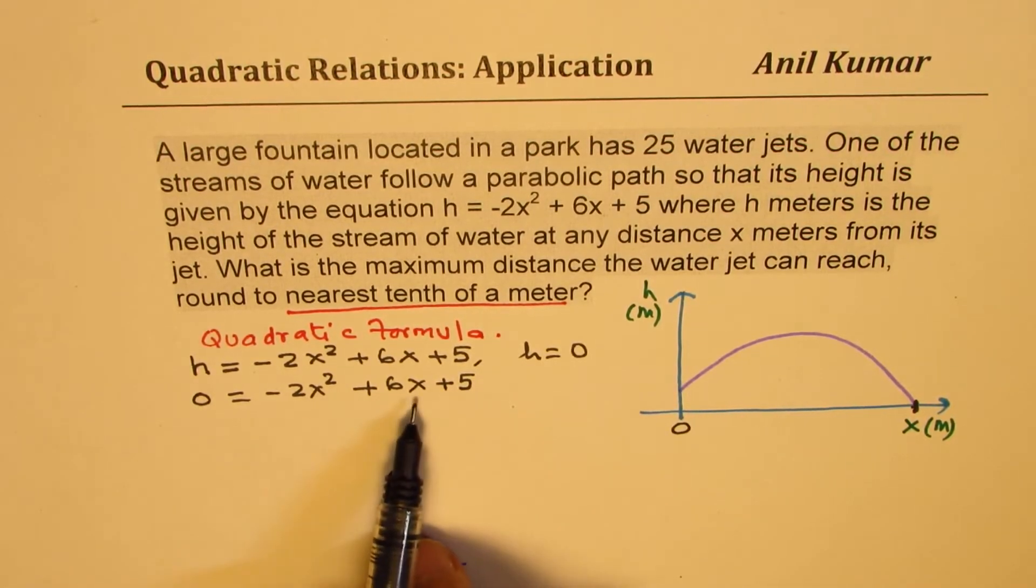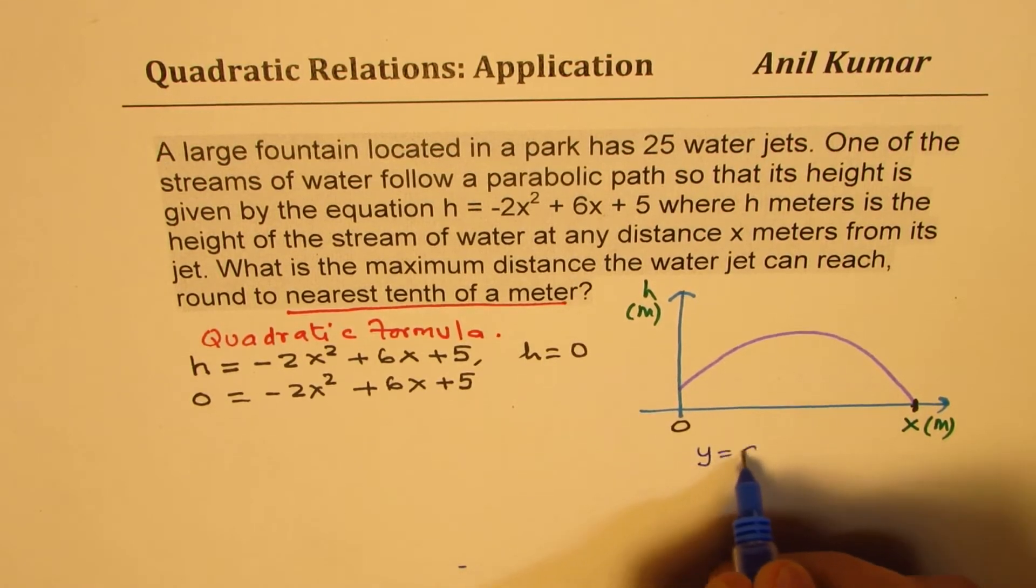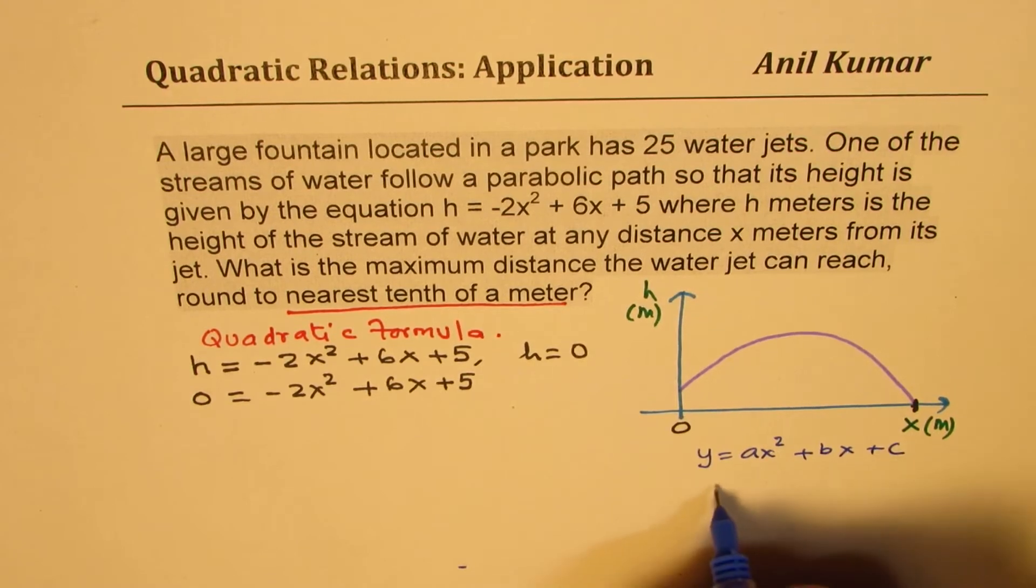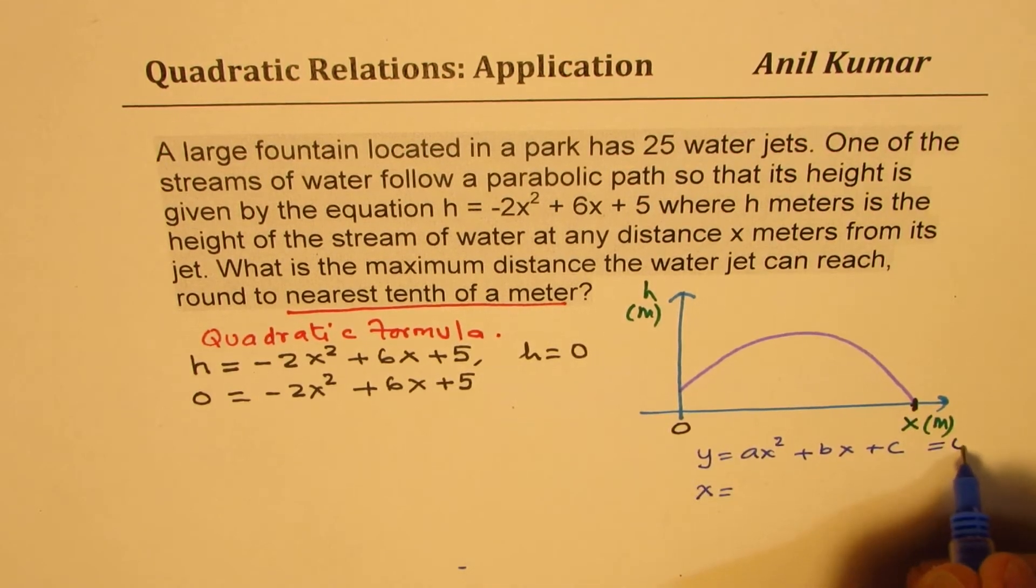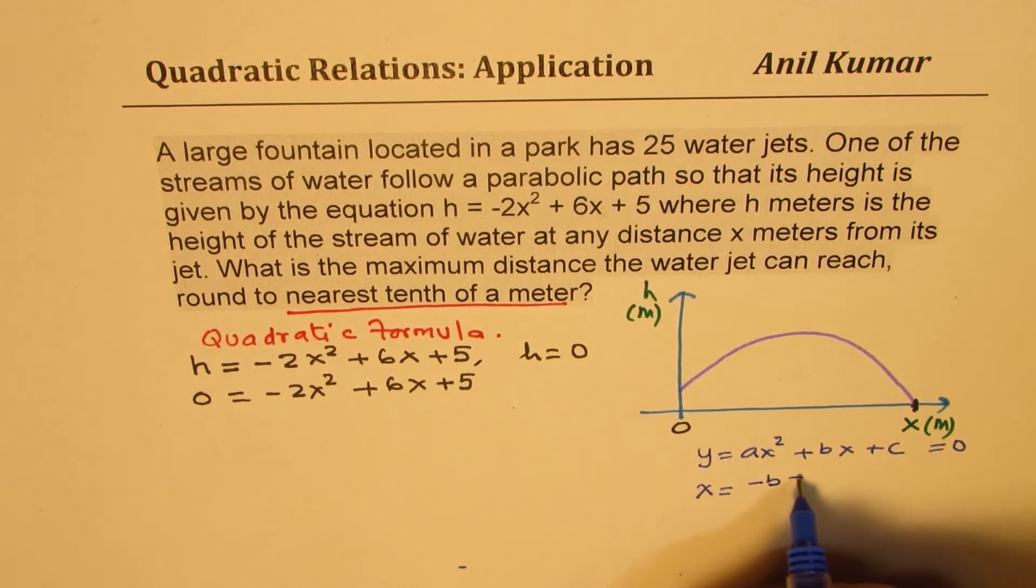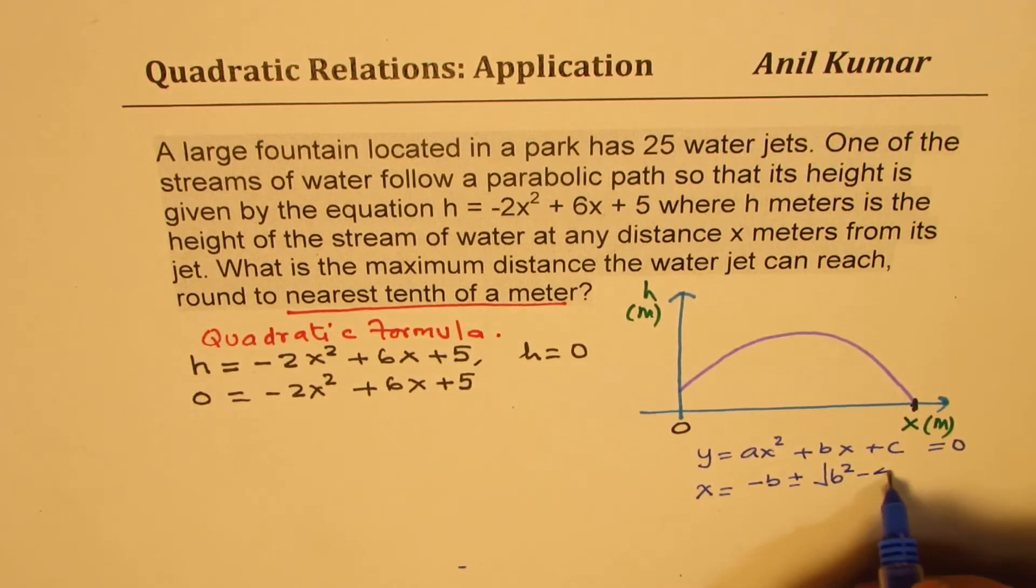Now, to find the value of x, we can use the quadratic formula, which is, let's rewrite. So if we have an equation, y equals to ax squared plus bx plus c, then the value which gives us 0 is at x equals to, that is, if I write this as equal to 0, in that case,